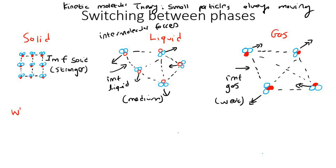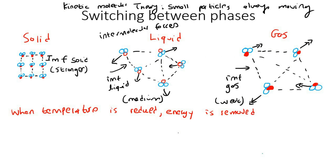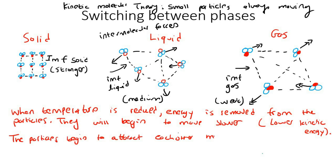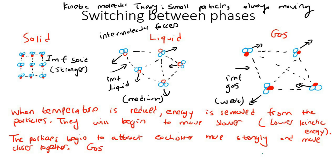When temperature is reduced, energy is removed from the particles — we're not adding energy, we're removing it. The particles begin to move slower because they now have lower kinetic energy. As a result, the particles begin to attract each other more strongly and move closer together, so you can go from a gas to a liquid and then to a solid.